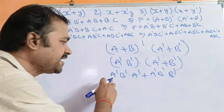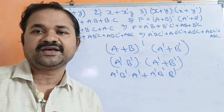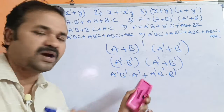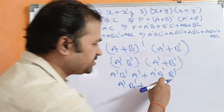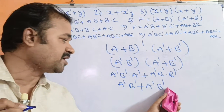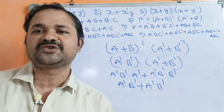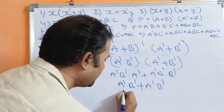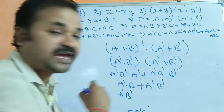Ā·B̄·Ā — by idempotent law, Ā·Ā = Ā, so we get Ā·B̄. Similarly B̄·B̄ = B̄, so we get Ā·B̄. Therefore ĀB̄ + ĀB̄ — by idempotent law X + X = X — gives ĀB̄. The solution for the fifth problem is ĀB̄.